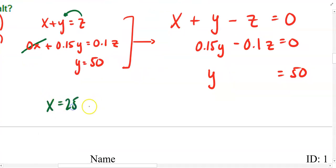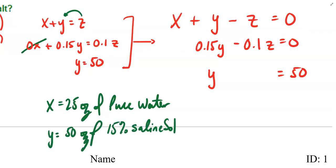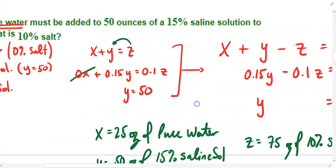There are 25 ounces of pure water, 50 ounces of 15% saline solution, and finally, 75 ounces of the 10% saline solution, the combination of the two.